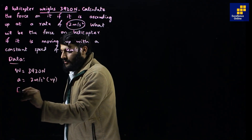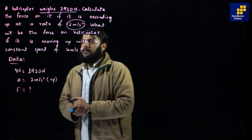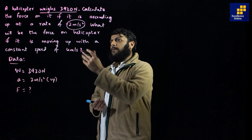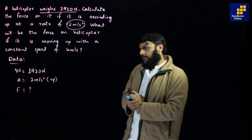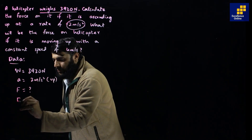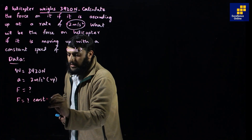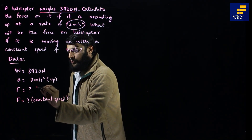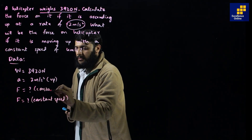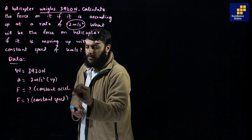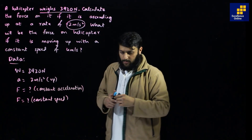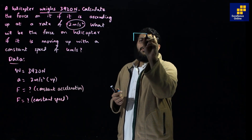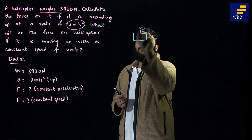The first part asks: what will be the force? The second part says: if it is moving with a constant speed of 4 meters per second, what will be the force? So we need to work out: first, force with constant speed; second, force with constant acceleration.